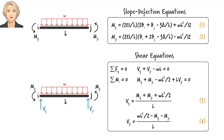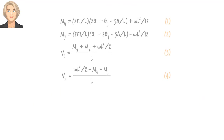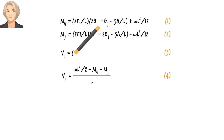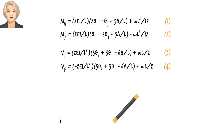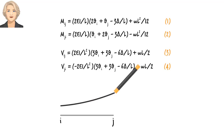Here are our four equations. Using equations 1 and 2, we can rewrite equations 3 and 4. These equations define shear and moment at the two ends of the member in terms of end slopes, theta_i and theta_j, and relative displacement, delta. Let's replace delta with the end displacements for the member.